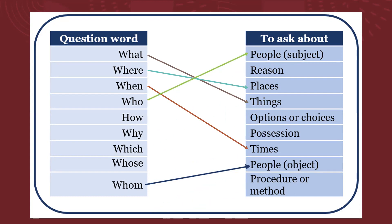WHO — ¿quién? Así que exacto — people como subject. Gente. HOW — ¿cómo? So it's talking about procedure or method — procedimientos o métodos. WHY — ¿por qué? Así que nos está solicitando una razón.